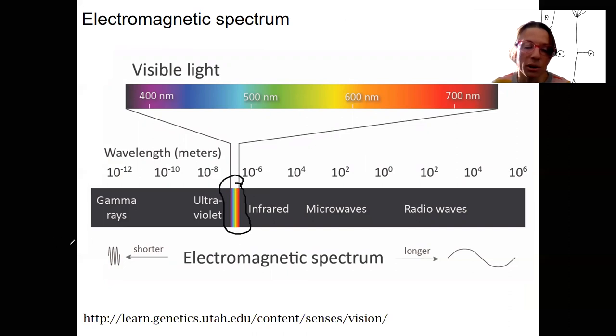So electromagnetic spectrum encompasses everything from gamma rays, through ultraviolet, infrared, microwave, radio waves, these are all part of the electromagnetic spectrum. And visible light is a very small portion of this spectrum.